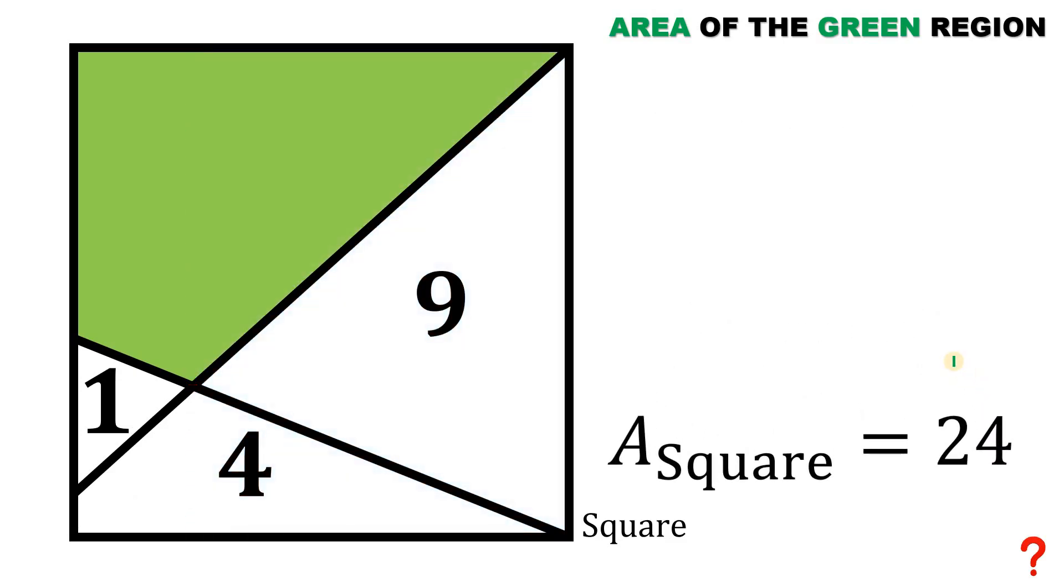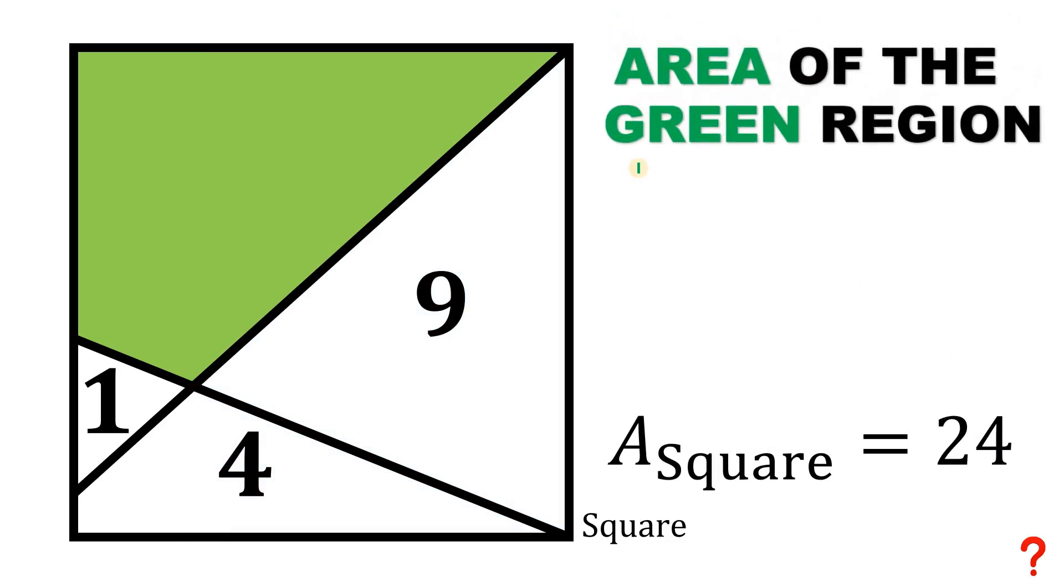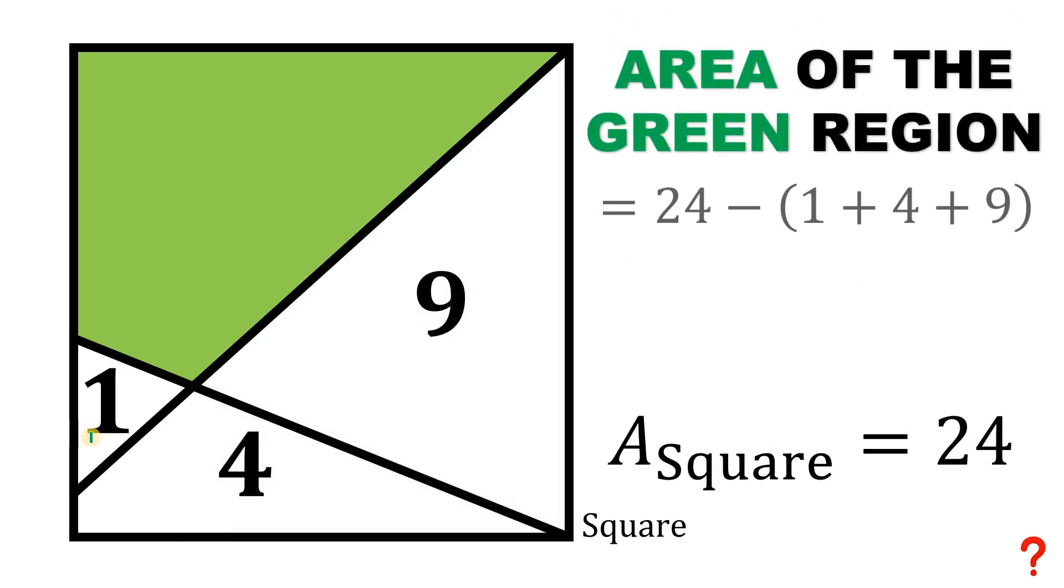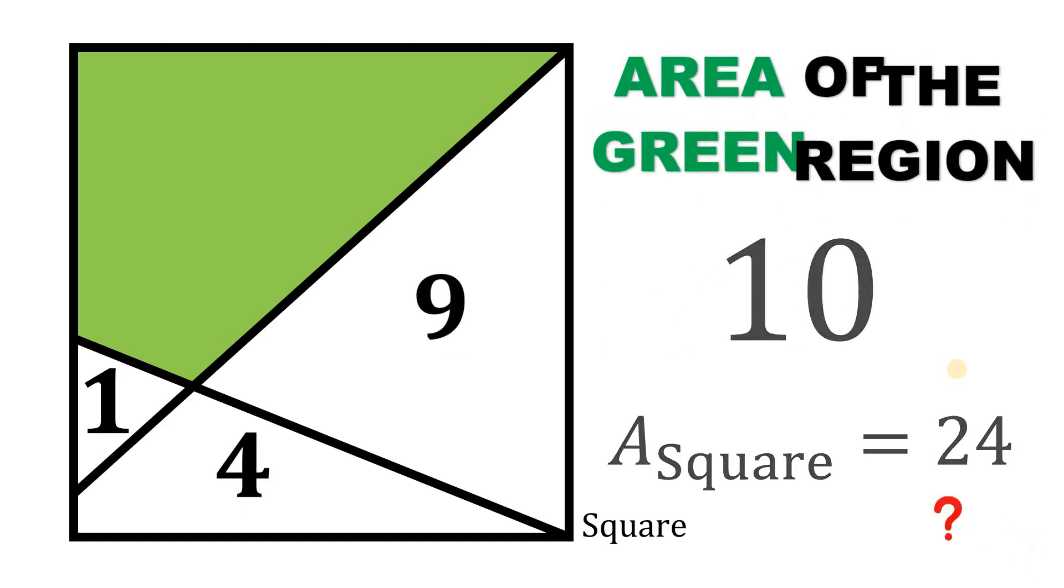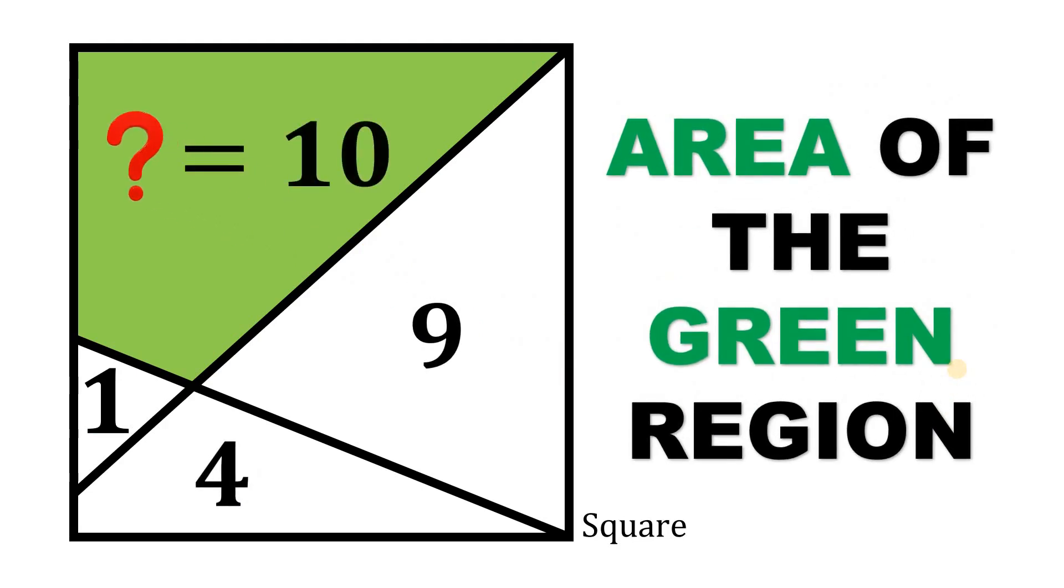Now we know the area of the square. We can now find the area of the green region. This is just 24 minus 1 minus 4 minus 9. And 1 plus 4 plus 9 is 14. 24 minus 14 equals 10. Therefore, the area of the green region equals 10 square units. This is our answer to this question.